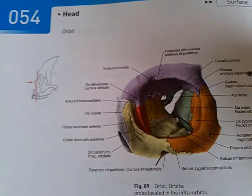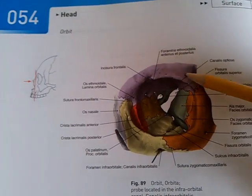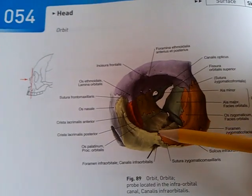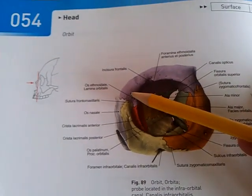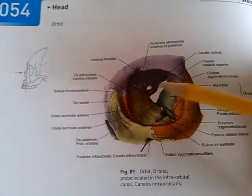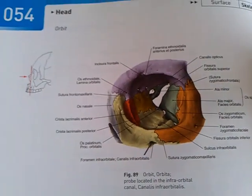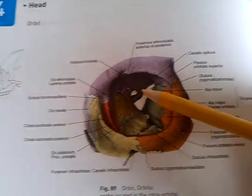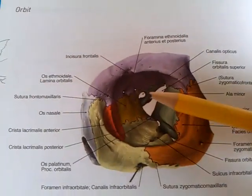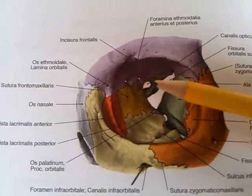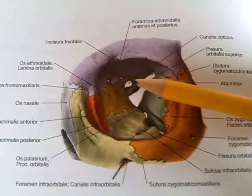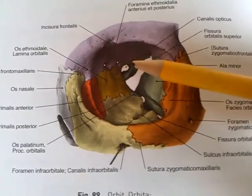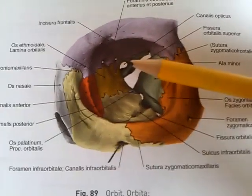The borders are the frontal bone, the zygomatic bone, and the maxillary bone. The important structures are the optic canal, which transmits the optic nerve and the central artery of the retina.